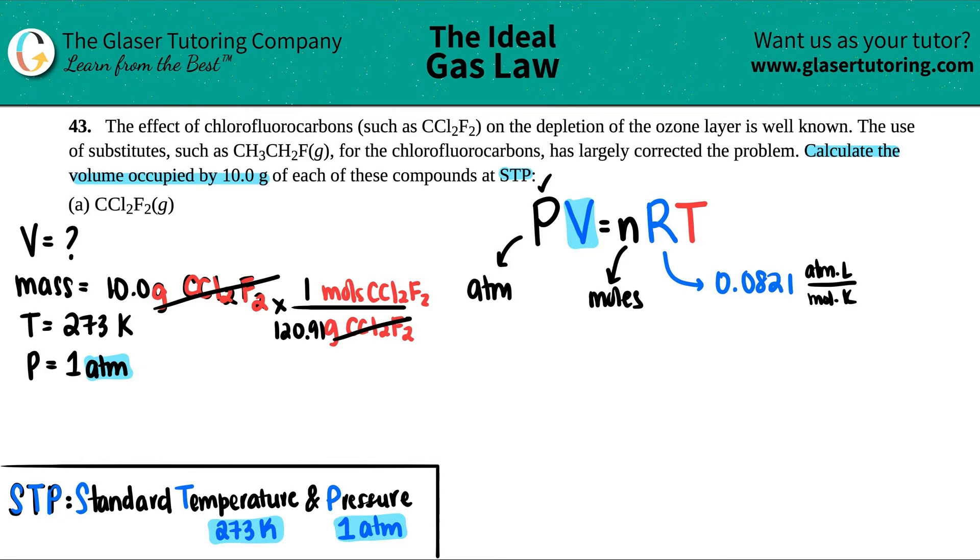Now we have 10 divided by 120.91. I'll give it a couple of decimals because this isn't the answer. You don't want to round too much. So I'll just say this, and now I have moles of CCl2F2.